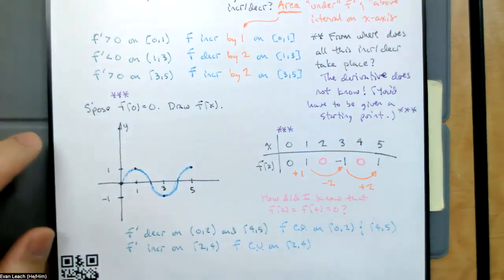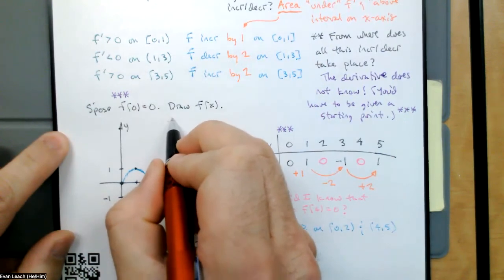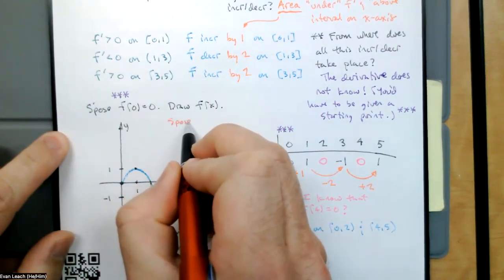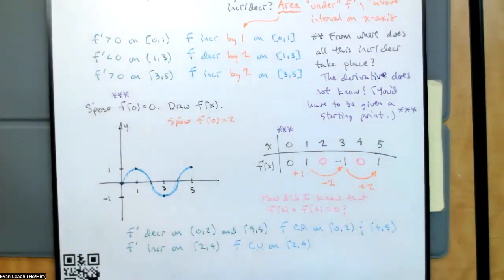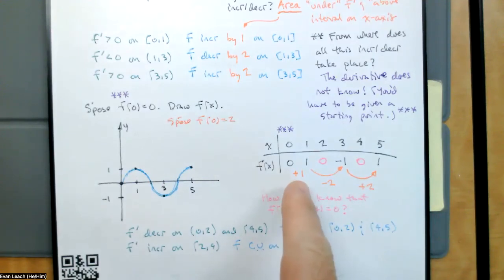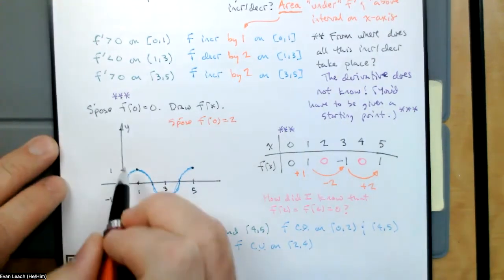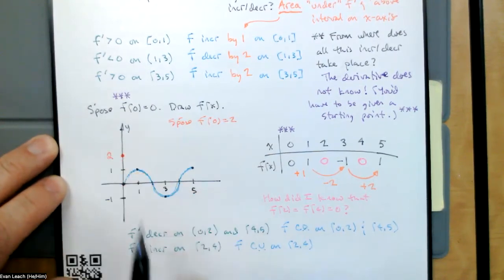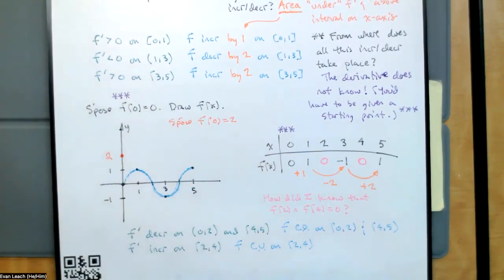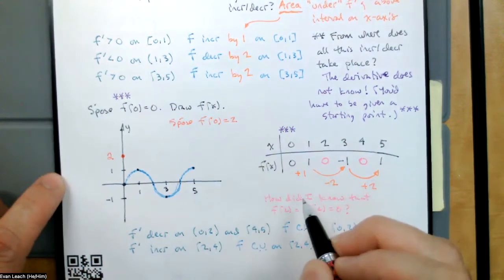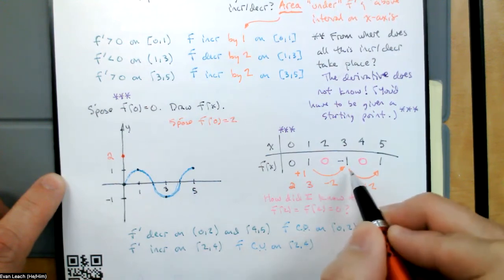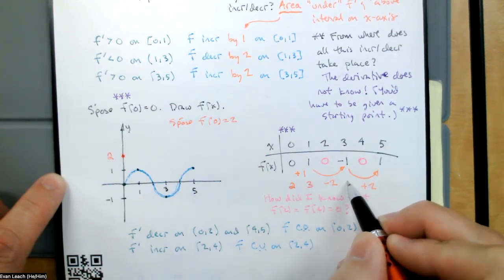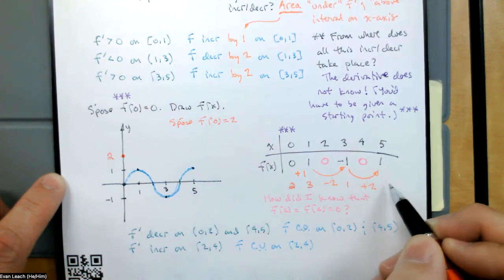So let's suppose f of 0 is equal to two. So instead of starting down here at zero, I want to start at two. The changes are all still the same. If instead of starting at zero we start at two, then when we increase by one we'll be at three. Then when we decrease by two we'll be at one. And then when we increase by two, we'll be back at three.